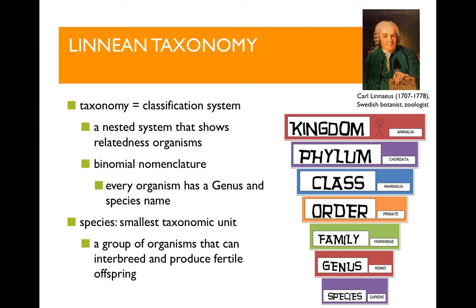The Linnaean taxonomy uses what's called binomial nomenclature, which is just a fancy way of saying a two-name naming system. Each species has a two-word name. Humans, for example, are called Homo sapiens. And only humans are Homo sapiens, though we share our genus name — Homo — with some of our ancestors and extinct relatives because of our shared similarities.